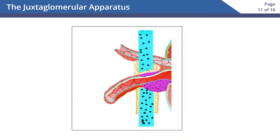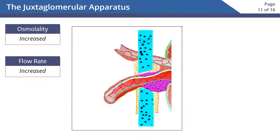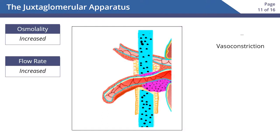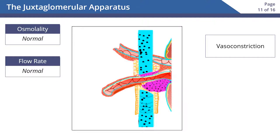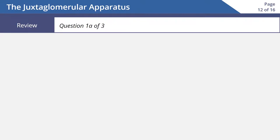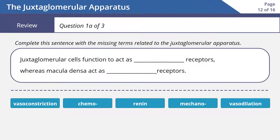In our last example, when filtrate has increased osmolality or increased flow rate, the macula densa cells sense this, which leads to the vasoconstriction of the afferent arteriole. This will return osmolality and flow rate of the filtrate to normal.